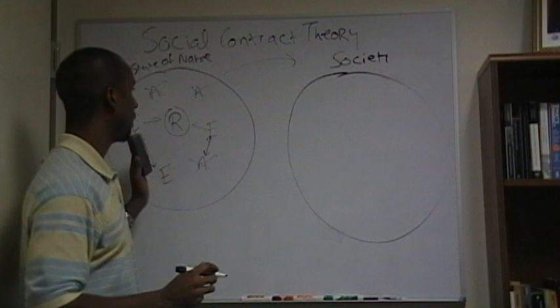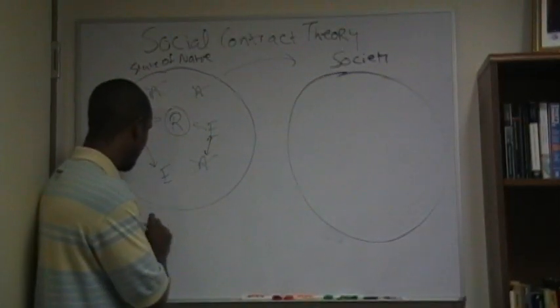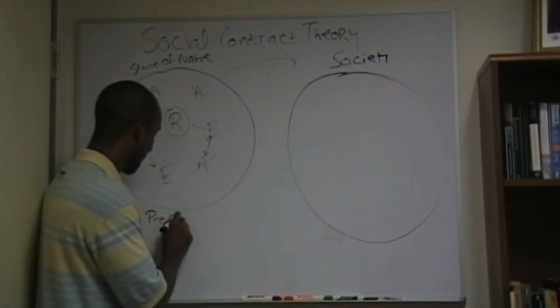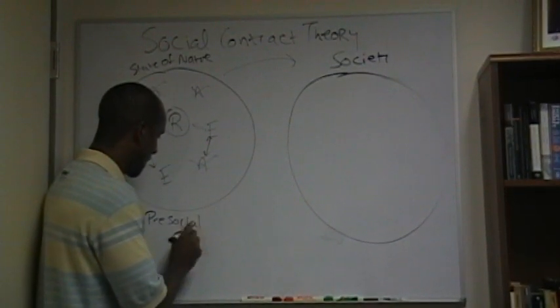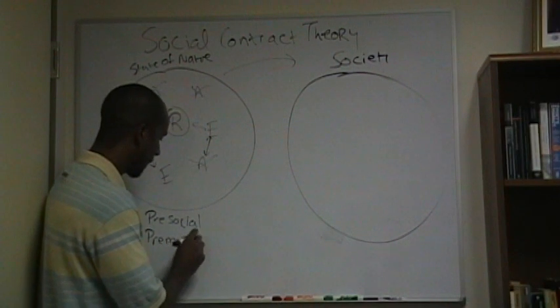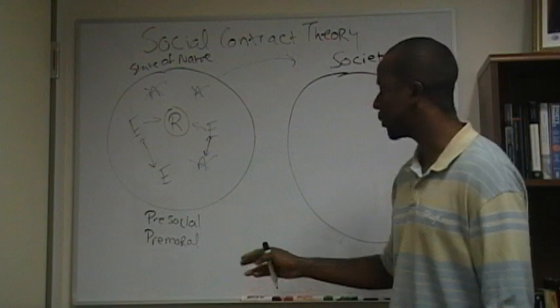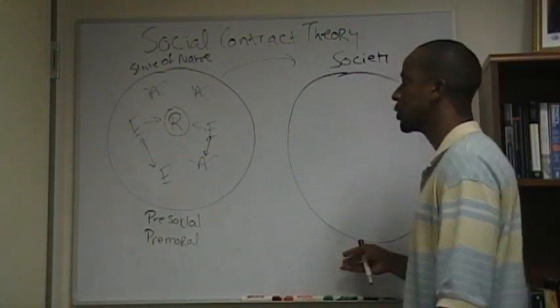So we have the state of nature in one hand, we have society on the other hand. The first thing to recognize is that this is a pre-social setting. But not only is it pre-social, it's pre-moral. And we'll talk later about what it means, the distinction between pre-moral and moral, pre-social and social.